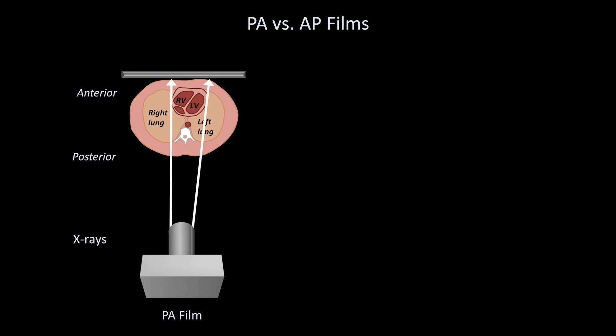For a PA film, this makes not much difference. Since the heart is a relatively anterior structure on the chest, it is close to the film where the x-ray is taken, and therefore the shadow it casts on the x-ray is an accurate representation of its true size.